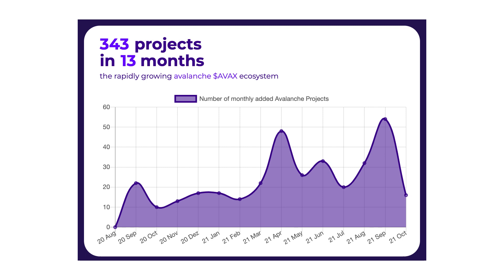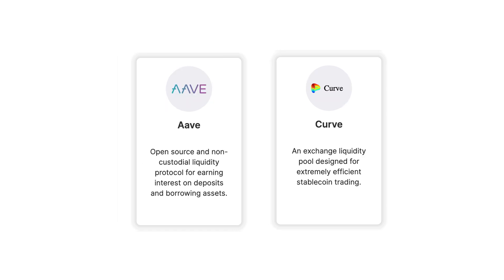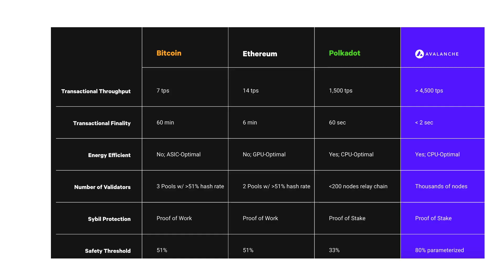Avalanche has 343 projects as of October 2021. Some of the biggest projects include Banky and Pangolin, both developed by Avalabs. There are also some Ethereum DeFi projects that added a deployment to Avalanche, like Aave and Curve.